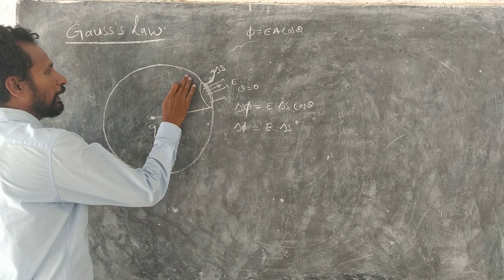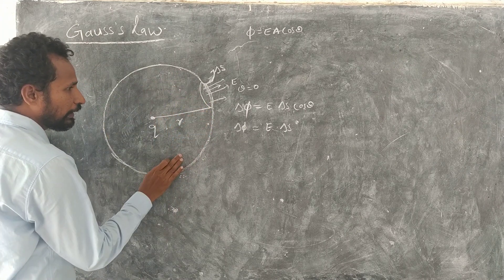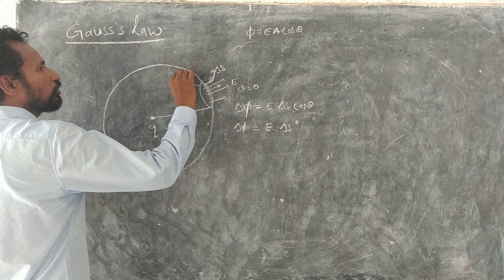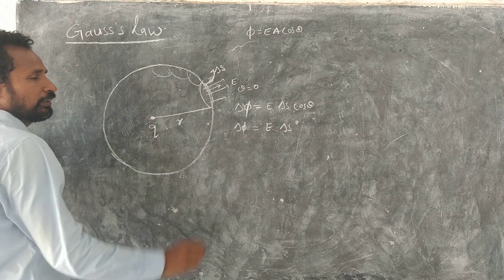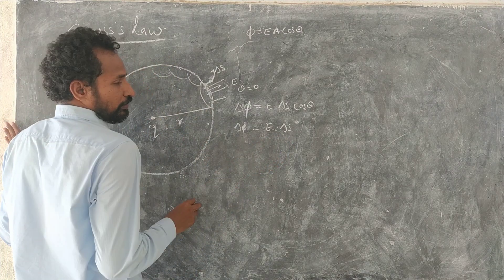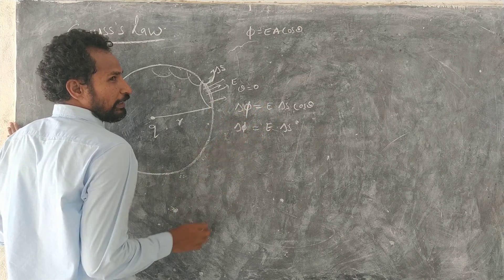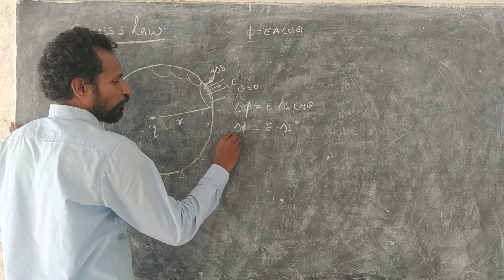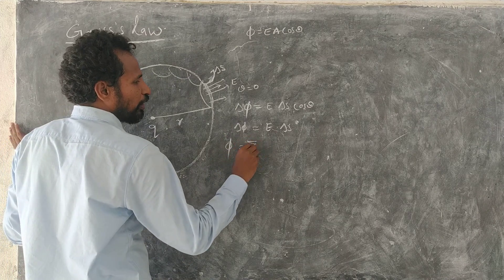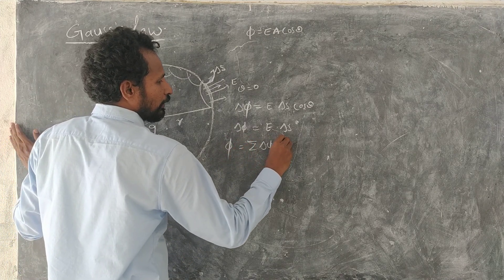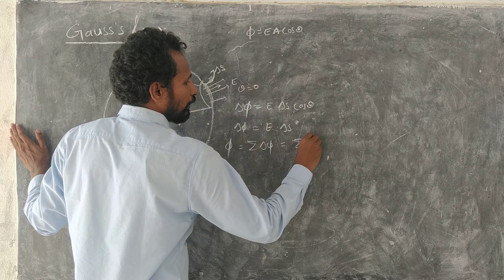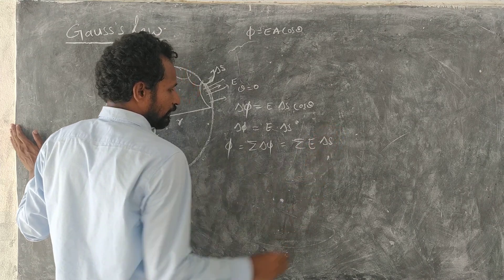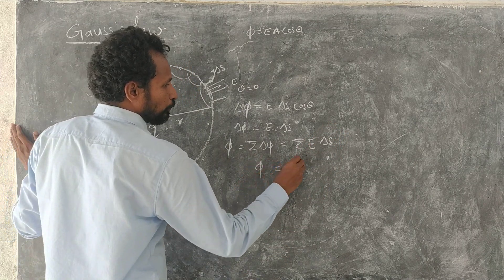Now I have calculated flux through this area. If you calculate flux through this area, if you calculate flux throughout the area means we need to construct small areas and we need to add all the flux. All areas, electric field passing through all areas we need to add. By adding all we will get total flux. Then total flux we can write phi is equal to summation of delta phi is equal to summation of E delta s.